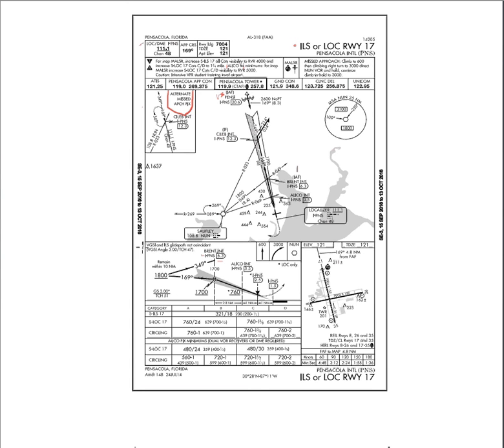One of the first things I want you to know when we come down to the profile view is this 'VGSI and ILS glide path not coincident.' The VGSI visual lights angle is 3 degrees, and the glide slope for the ILS is also 3 degrees. But the threshold crossing height is a little different — 47 feet versus 51 feet. What that means is the lights are going to take you to a slightly shorter point on the runway than the ILS will. Not a big note, but just keep in mind things like that exist.